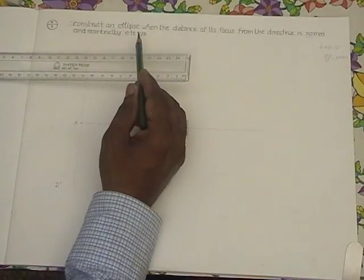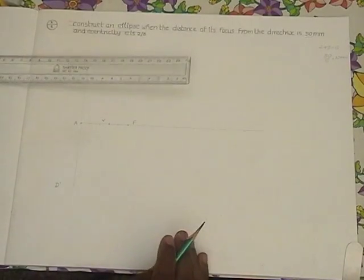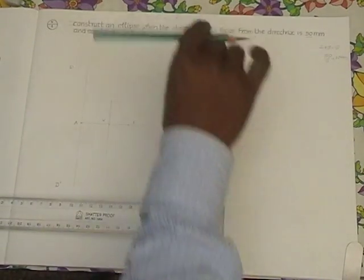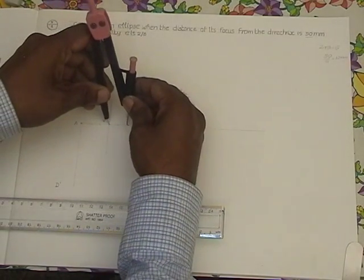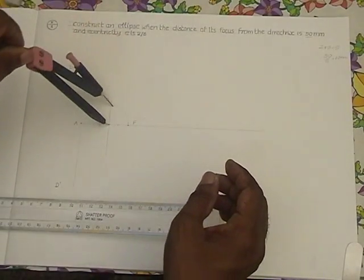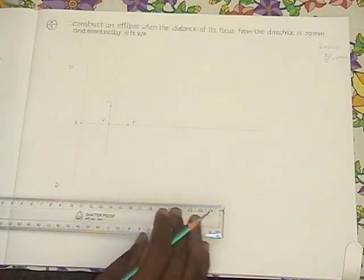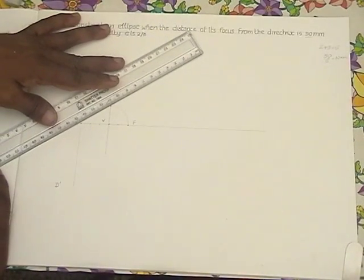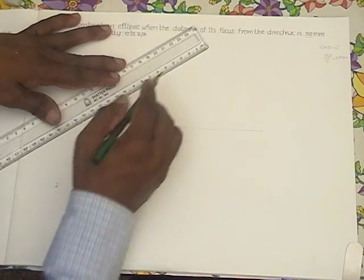Given E as 2 by 3, take 2 parts from F and specify V. Through V, draw one vertical line. Then, with the help of a compass, make an arc with V as radius to transform this arc to the vertical line passing through V — you get this point. Name this point as C. Now connect A and C. Join these two points A and C; this is the generating line for the ellipse.